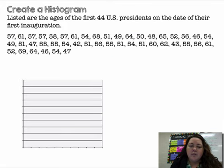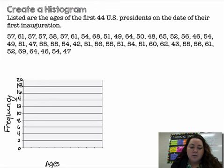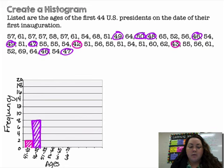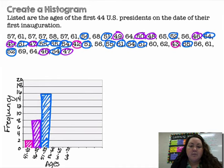Now create a histogram. Listed are the ages of the first 44 U.S. presidents on the date of their first inauguration. So these are their ages when they were first inaugurated. So I'm going to make a histogram. On the right, my vertical axis I have frequency. On my horizontal axis I have ages. And I'm going to break them into intervals: 41 to 45, 46 to 50, 51 to 55, 56 to 60, 61 to 65, 66 to 70. So now I need to figure out what's the frequency of presidents that were inaugurated between the ages of 41 and 45. I only had two of them. My next piece is 46 to 50. So I had 8 presidents that were inaugurated between the ages of 46 and 50. I had 16 between the ages of 51 and 55. And then I would continue to find all those pieces until I finished my histogram.